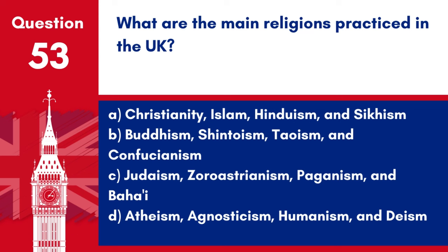Question 53. What are the main religions practiced in the UK? A. Christianity, Islam, Hinduism and Sikhism. B. Buddhism, Shintoism, Taoism and Confucianism. C. Judaism, Zoroastrianism, Paganism and Baha'i. D. Atheism, Agnosticism, Humanism and Deism. Answer: A. Christianity, Islam, Hinduism and Sikhism. The main religions practiced in the UK include Christianity, Islam, Hinduism and Sikhism.